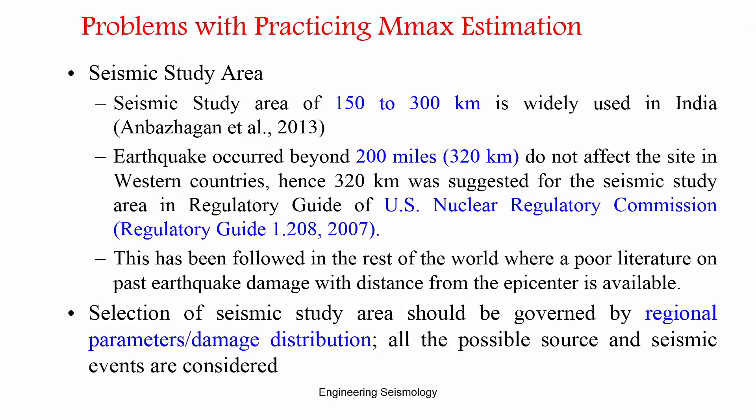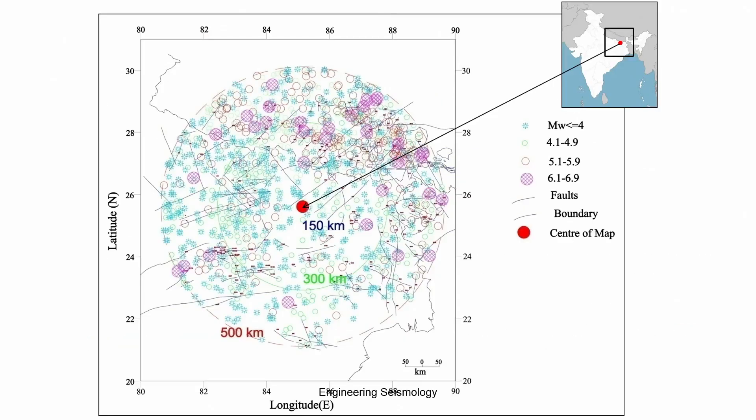The problem with the 7 existing methods is that whenever the seismic study area changes, your data changes, and your Mmax also changes. We need a method that is not affected by changes in the seismic study area or the dataset. The rupture-based method works this way. To demonstrate this, we tested two regions: Patna in North India and Kalpakkam in South India — representing intra-slab and inter-slab settings.